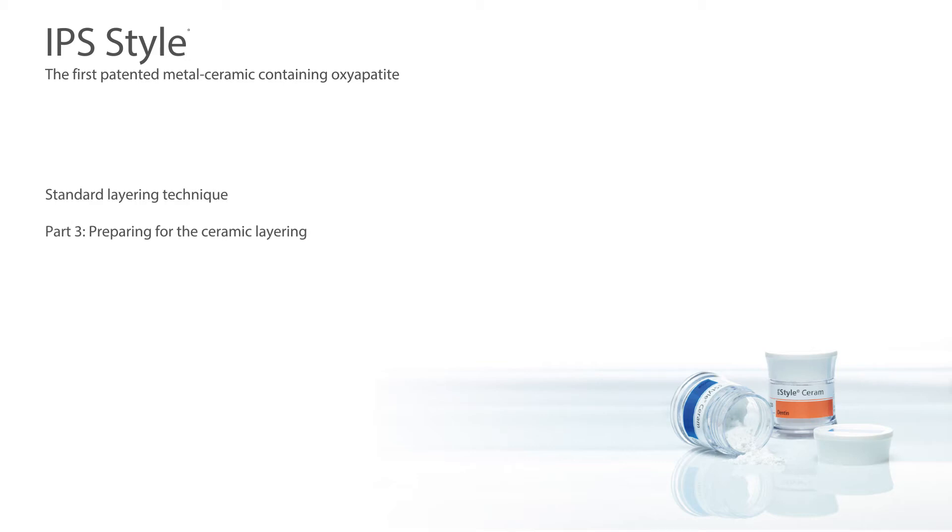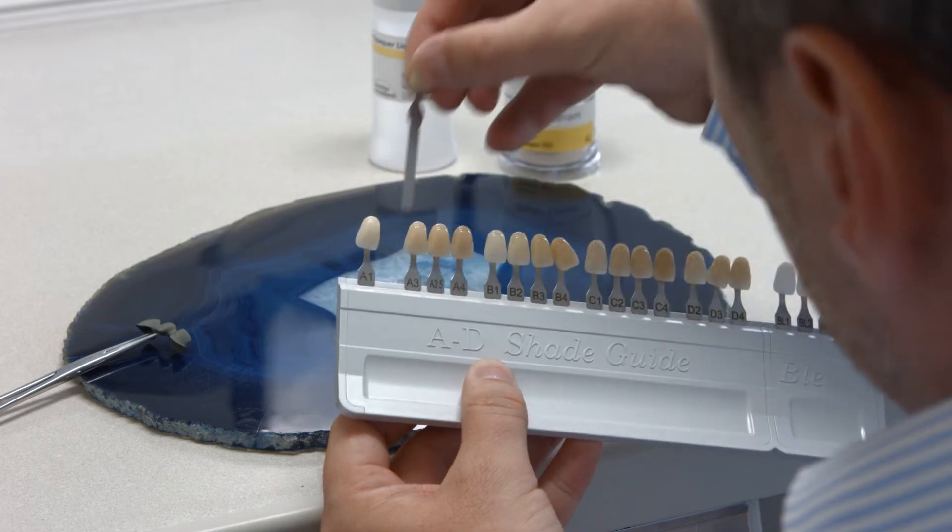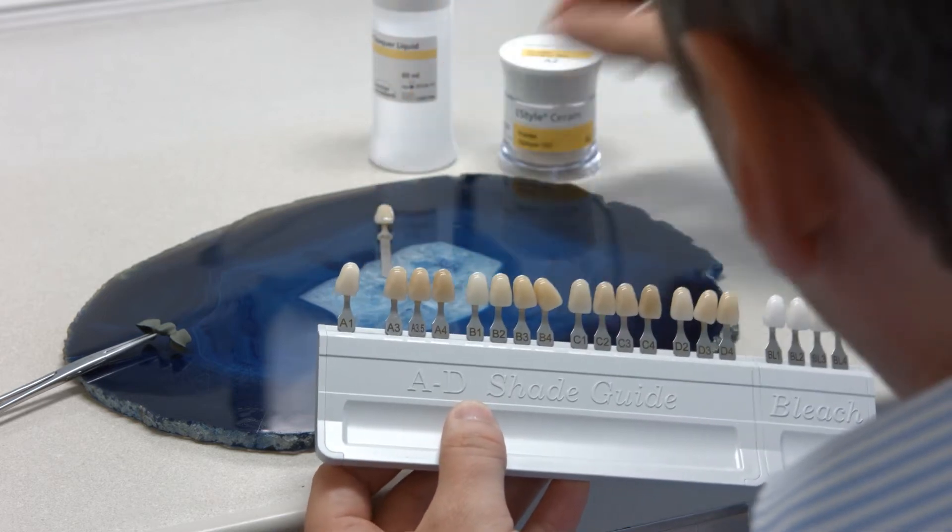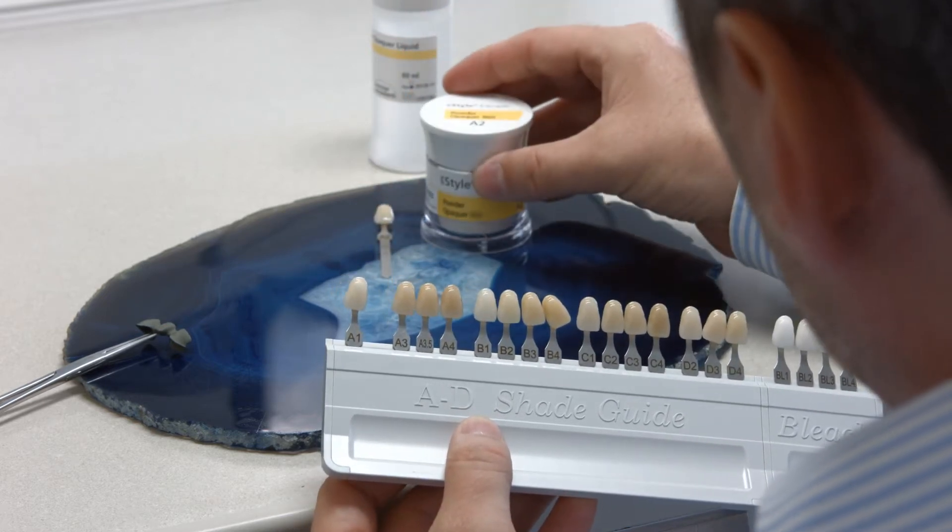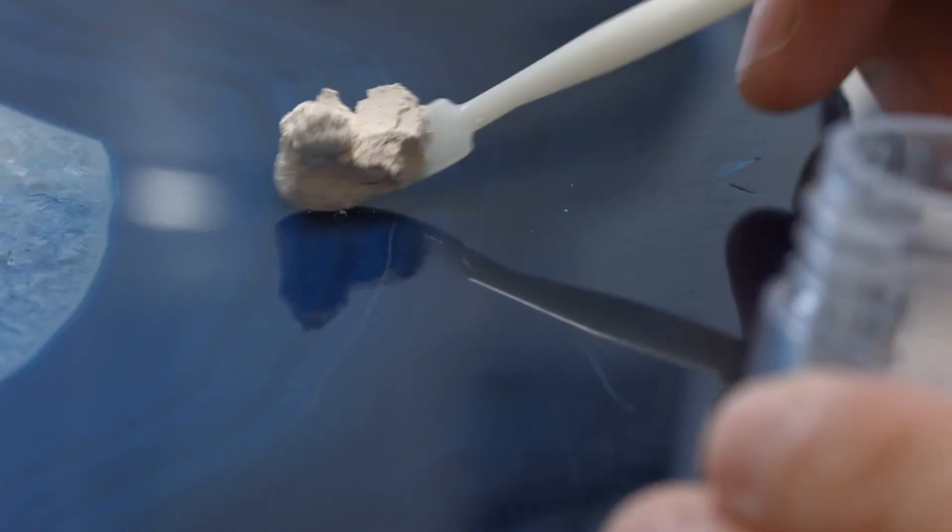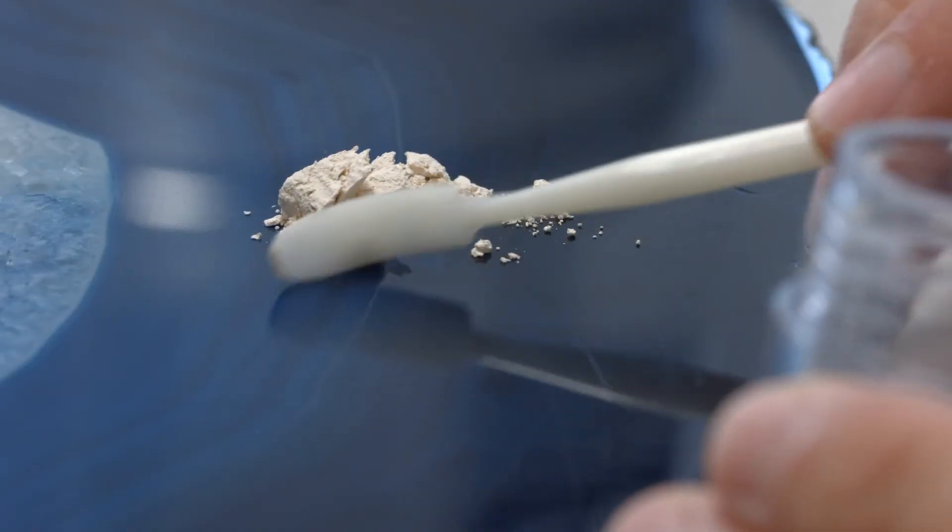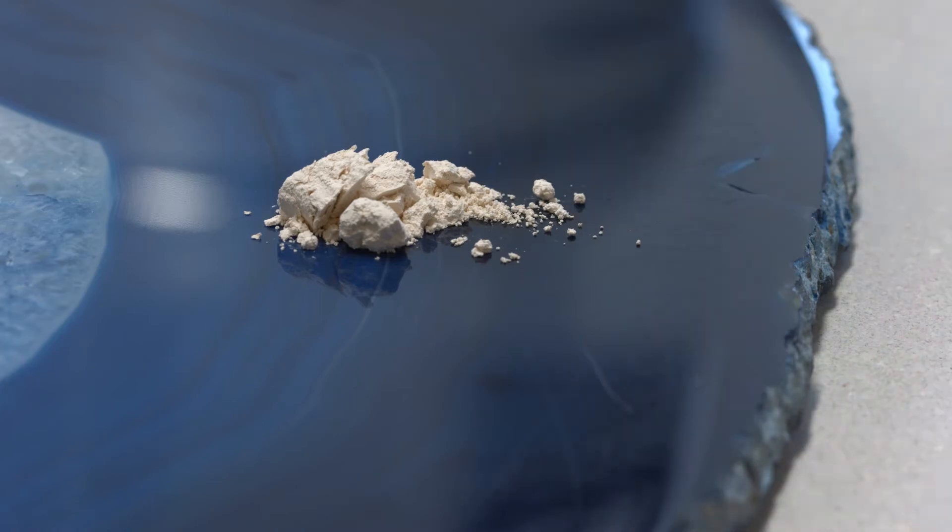Part 3 describes the preparation necessary for the ceramic layering. Select the suitable IPS style ceram powder opaquer in accordance with the required tooth shade and mix it with some IPS powder opaquer liquid on a mixing plate until the desired consistency is obtained.